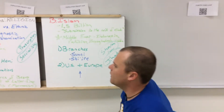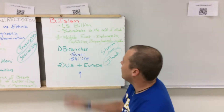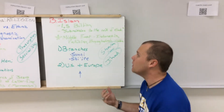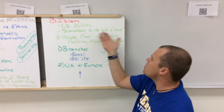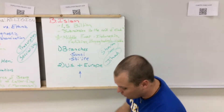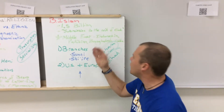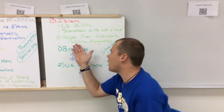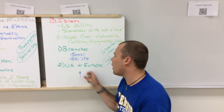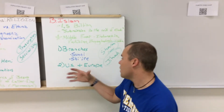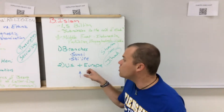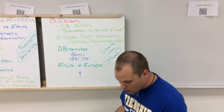The next major universalizing religion is Islam. There are 1.5 billion Muslims in the world. The word Islam means submission to the will of God, and they refer to God as Allah. It's mainly located in the Middle East, but there are also large populations in Indonesia, Pakistan, Bangladesh, and India. Islam is also growing in the United States and Europe.